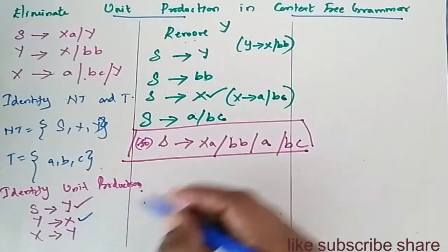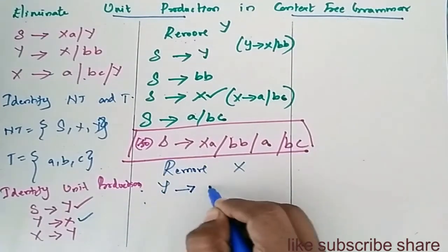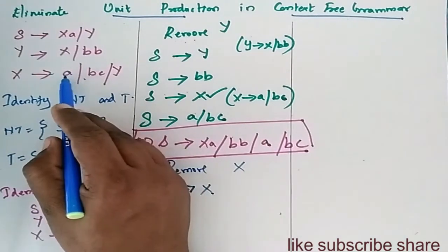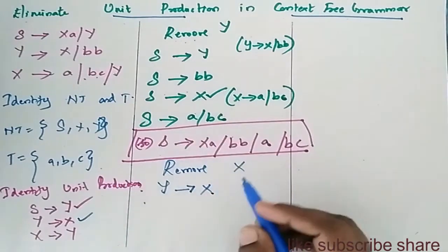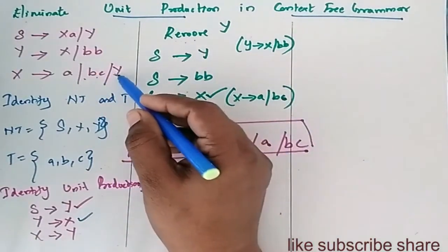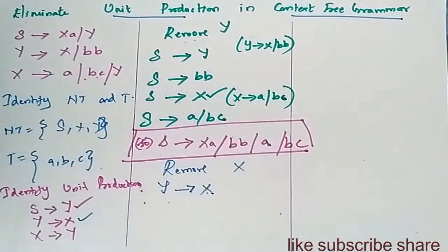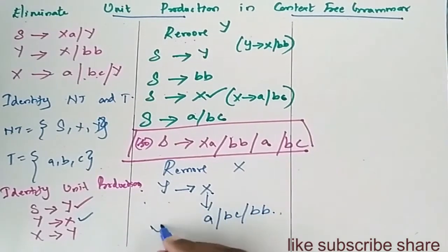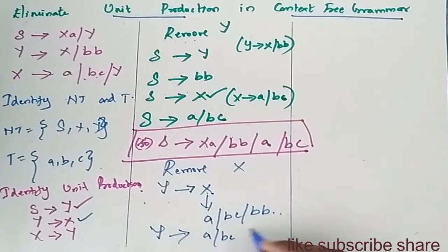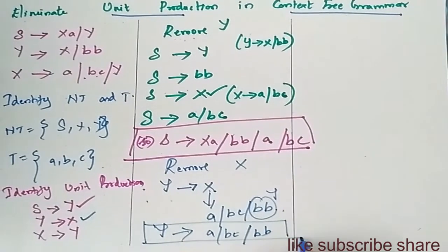Now remove Y to X. Y determines X. When we look at X, it determines A, BC, and Y. Since Y has already been removed, Y now determines A, BC, and BB. So Y determines A, BC, and BB.